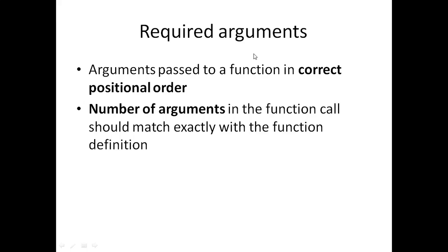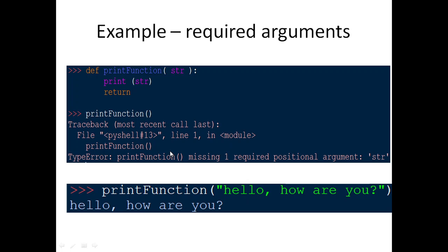The first type is required arguments. These arguments are passed to a function in correct positional order, so order is important. If you have two arguments to be passed, the position matters. If the first argument is name and second is age, that order should be maintained when we call a function. Also, the number of arguments in the function call should match exactly with the function definition — if you have three parameters, you must call with three arguments.